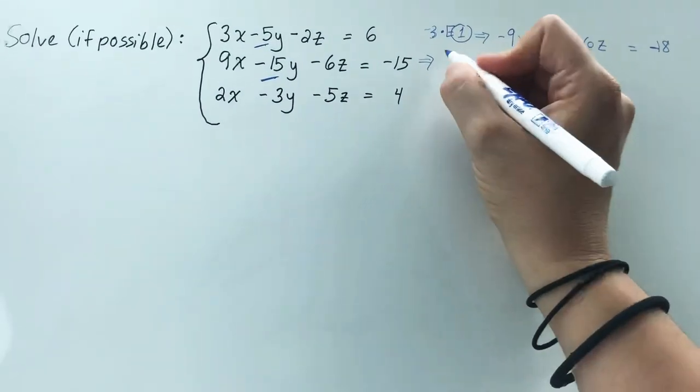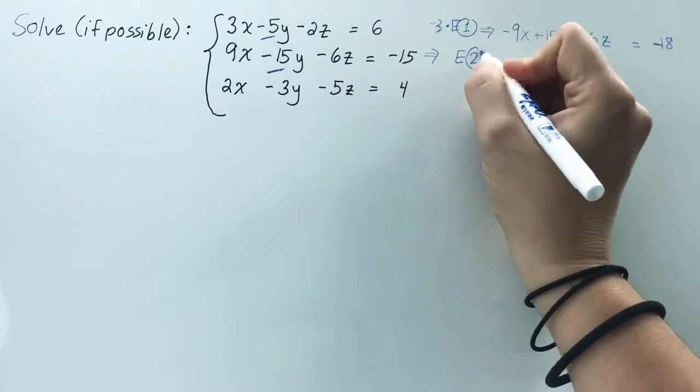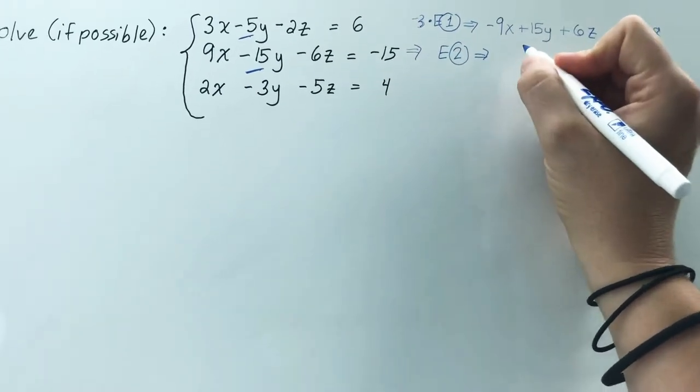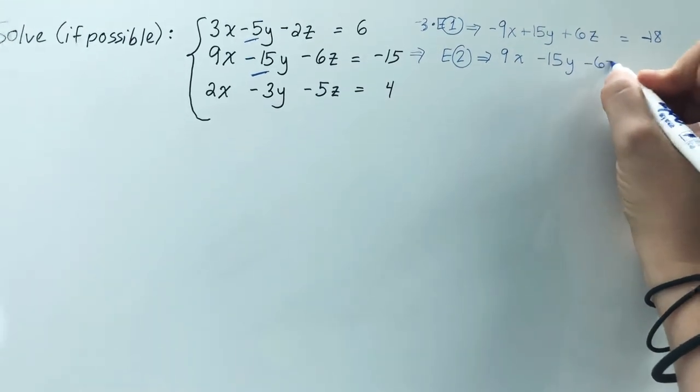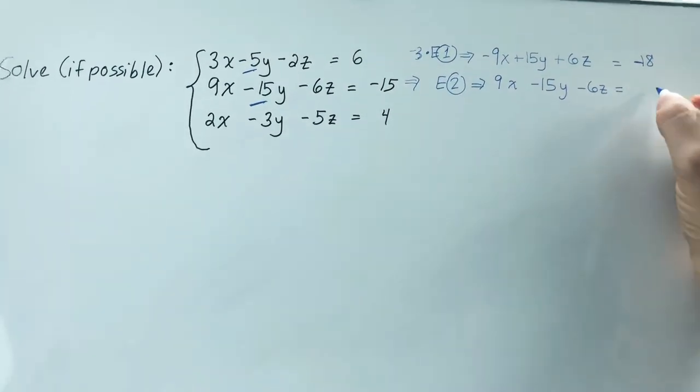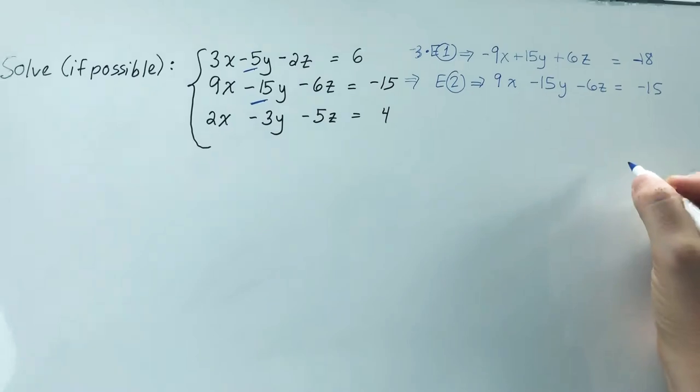Now if I took that with the original equation 2, I'd have 9x minus 15y minus 6z equals negative 15, right?